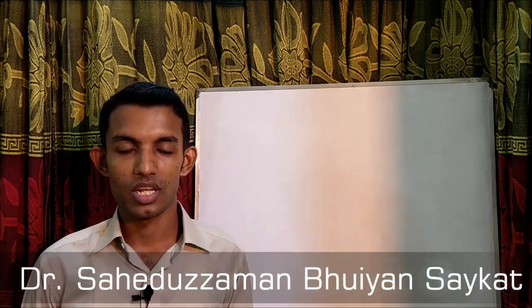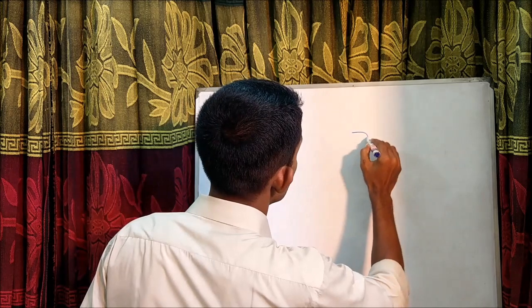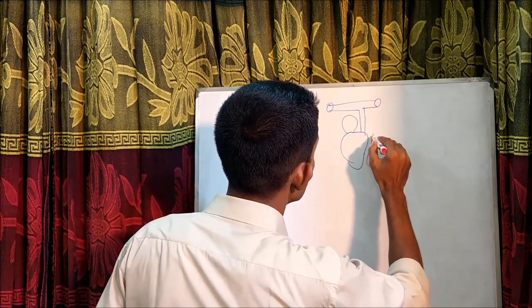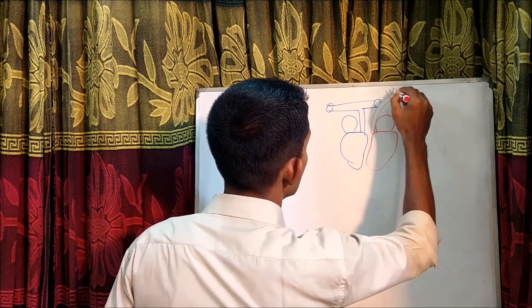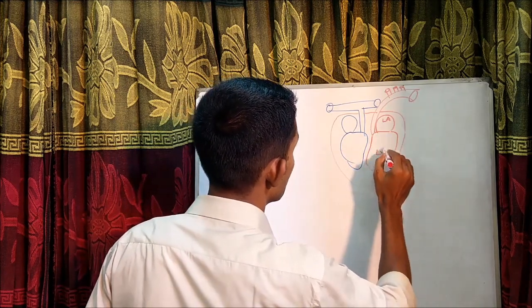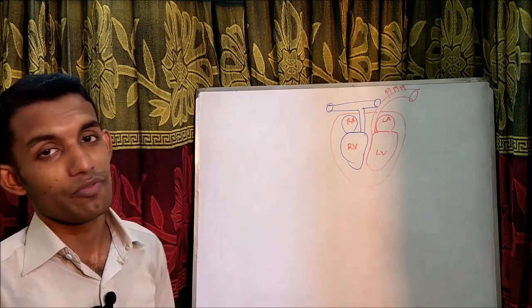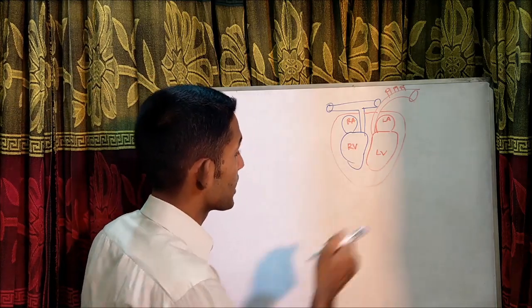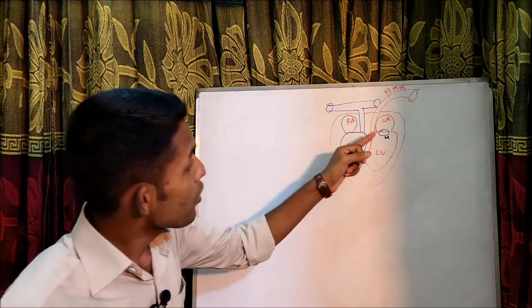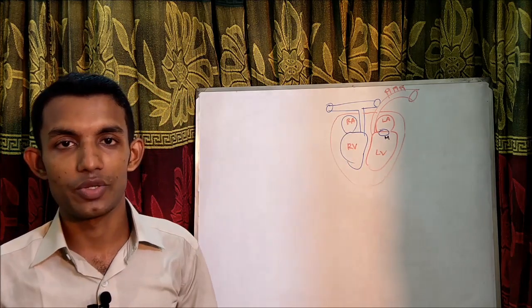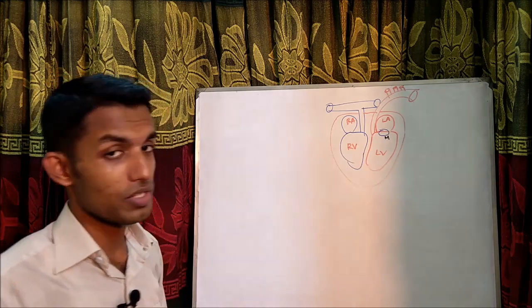I'm Dr. Shrikath. Today I'll discuss mitral stenosis. Using a schematic diagram of the heart showing the left atrium, left ventricle, right atrium, and right ventricle: the mitral valve sits between the left atrium and left ventricle, and narrowing of this mitral valve causes obstruction of blood flow from left atrium to left ventricle — that is called mitral stenosis. The most common cause is chronic rheumatic heart disease.